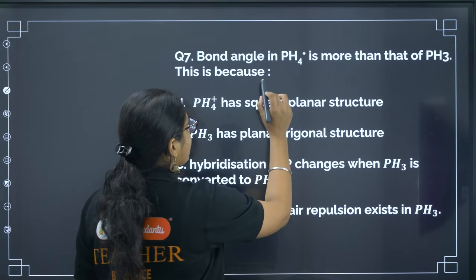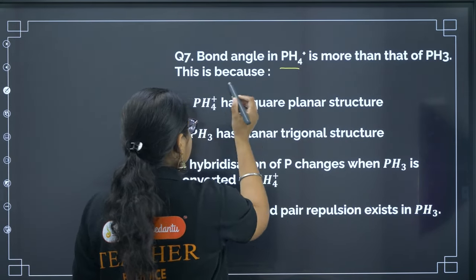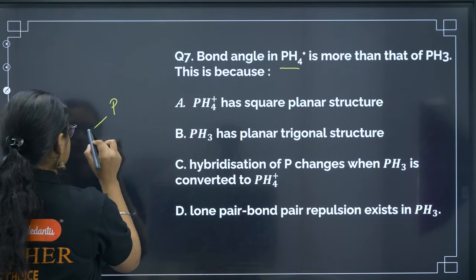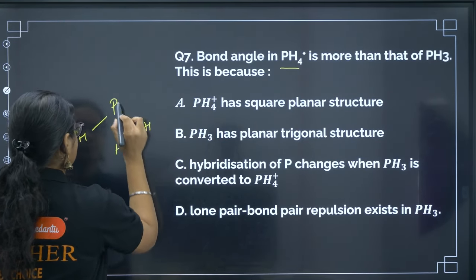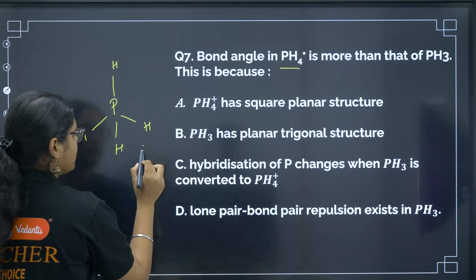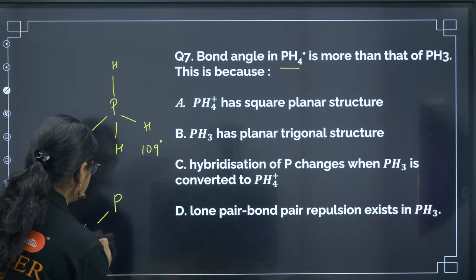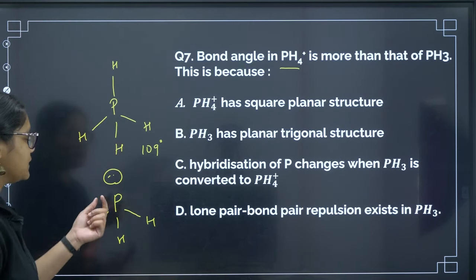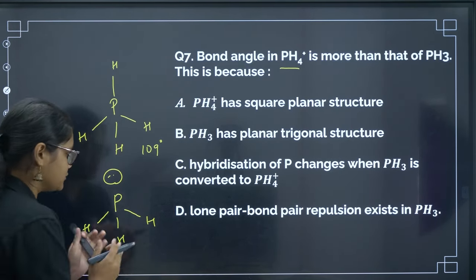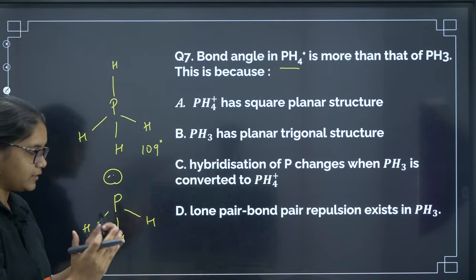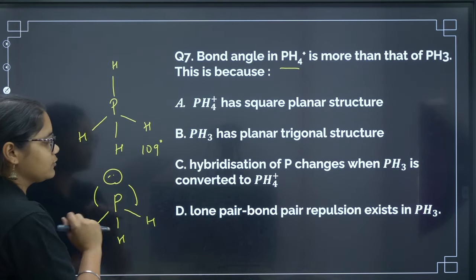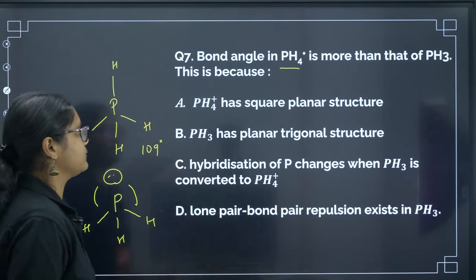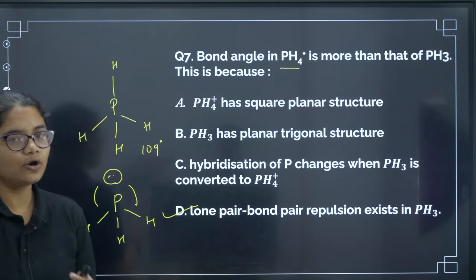Next: bond angle in PH4⁺ is more than that of PH3 — this is because PH4⁺ is tetrahedral at 109°, while in PH3 there is one lone pair. Due to repulsion between the lone pair and bond pairs, the bonds come closer together, decreasing the bond angle in PH3. So the correct answer is option D.